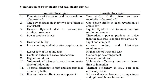Comparing four-stroke and two-stroke engines: the four-stroke uses four piston strokes and two crankshaft revolutions, while the two-stroke uses two piston strokes and one crankshaft revolution. The four-stroke has one power stroke every two revolutions; the two-stroke has one power stroke every revolution. The four-stroke requires a heavier flywheel due to non-uniform turning moment; the two-stroke uses a lighter flywheel. Theoretically, the two-stroke produces twice the power of the four-stroke for the same engine size.